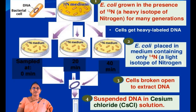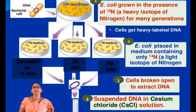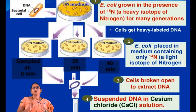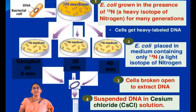After several generations, the bacterial culture was switched to grow on another medium containing nitrogen-14, that is light nitrogen, and allowed to grow for several more generations. In this lecture, I am going to explain the observations across four generations of growth in this experiment.